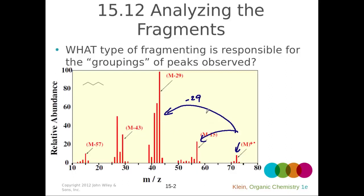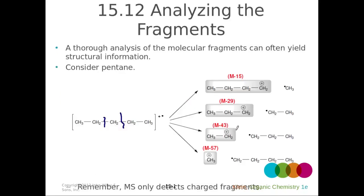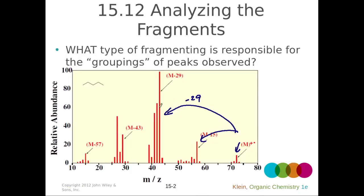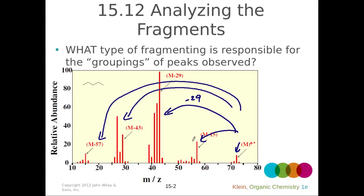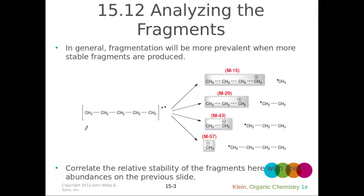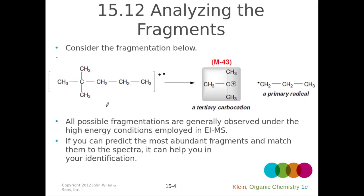To summarize the fragmentation of pentane: loss of a methyl group gives M−15, loss of an ethyl group gives M−29, loss of a propyl group gives M−43, and loss of a butyl group gives M−57. There are also smaller peaks where just a hydrogen is additionally lost alongside each of those groups.